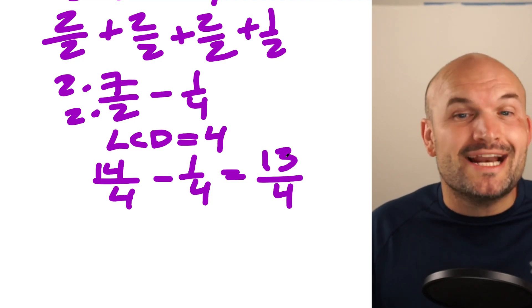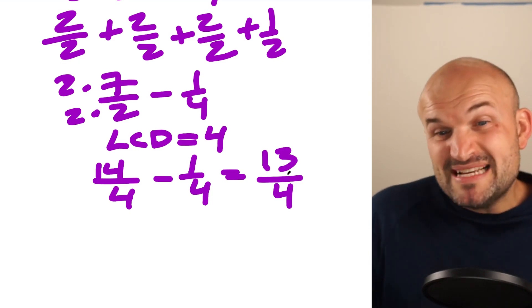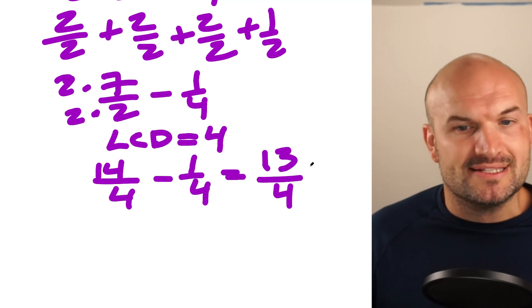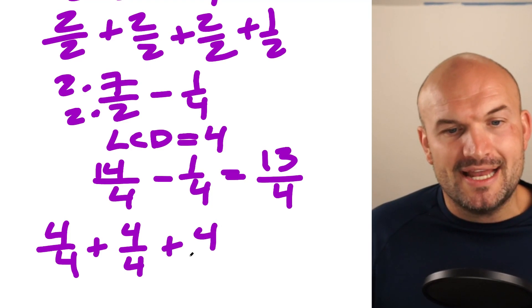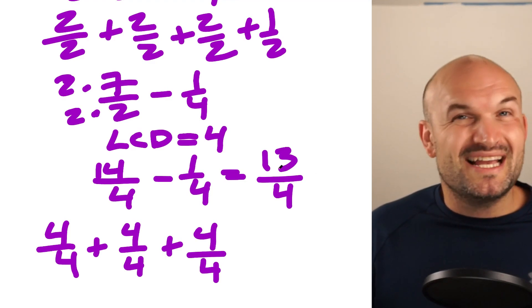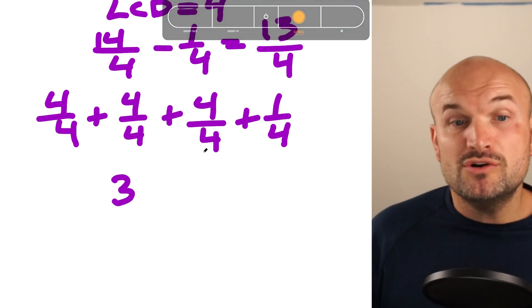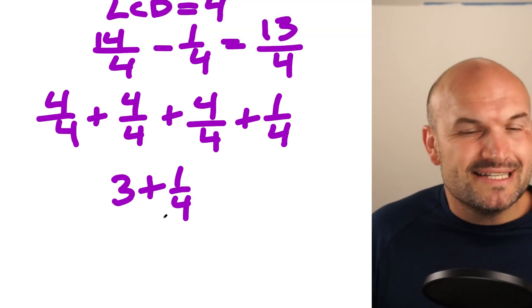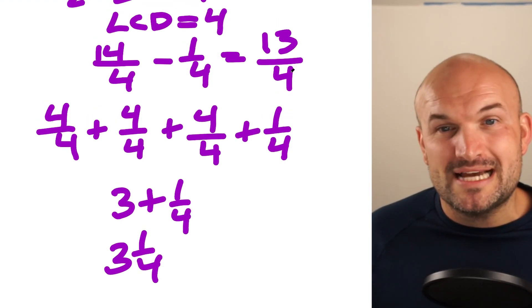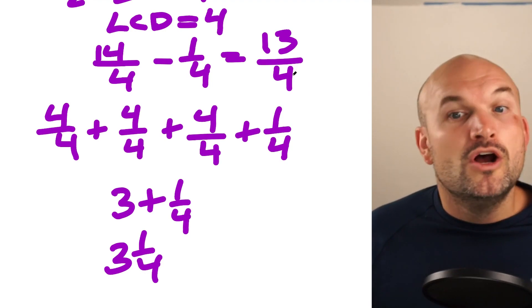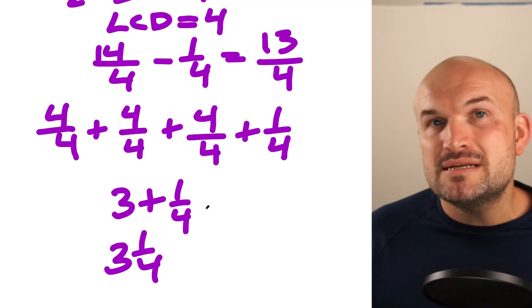If we need to rewrite our answer as a mixed number, we ask how many wholes can we make from 13 over four. Four over four is one whole, eight over four is two wholes, 12 over four is three wholes — so 13 over four includes three wholes with one-fourth remaining. That means our answer is three and one-fourth. An easier way to see this: how many times does four divide into 13? Three times, with a remainder of one. So the improper fraction 13 over four written as a mixed number is three and one-fourth.